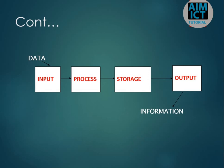To summarize the computer process flow: we have data, which goes through input, then process, then storage, and finally output. The output we get at the end is information.